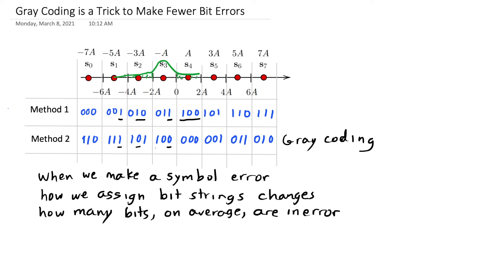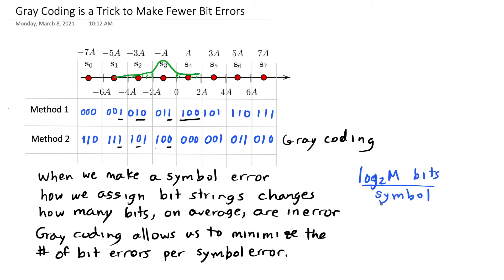It's very likely that when I make an error, my error is going to be at one of my nearest neighboring symbols, and not a further distant neighbor like S1 and S5. So gray coding allows us to make the minimum possible number of average bit errors. Remember that there are log base 2 of m bits per symbol. When I make a symbol error, it's possible I could make up to this many bit errors.